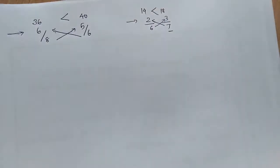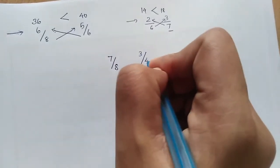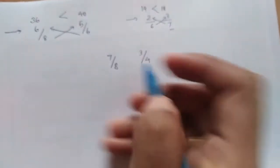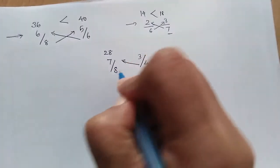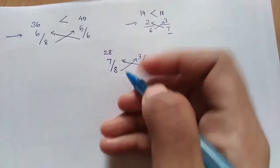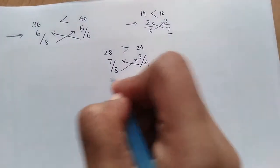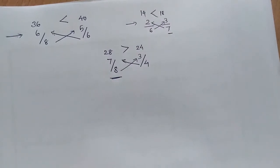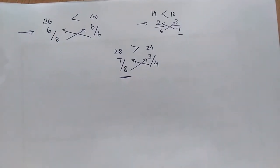Another one: 7/8 and 3/4. Cross multiply: 28, 24. This is largest, so 7/8 is largest. This is a simple method to find which rational number is highest.